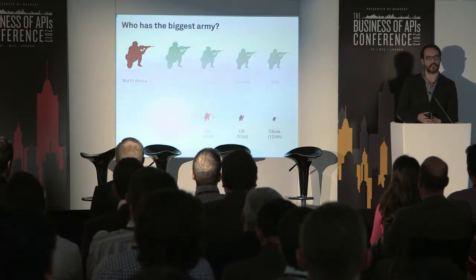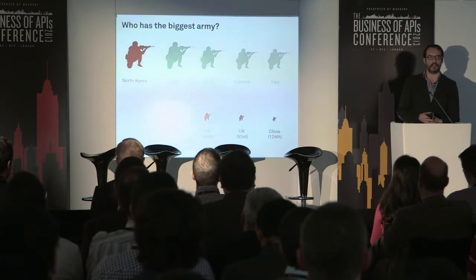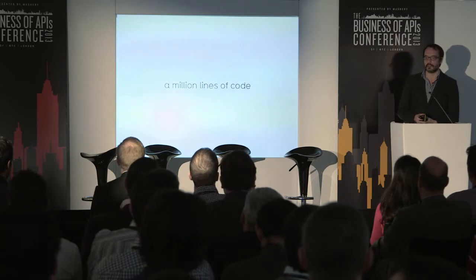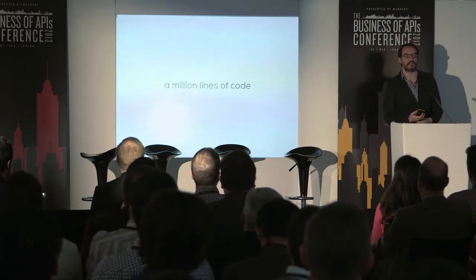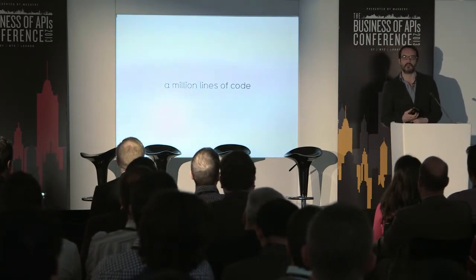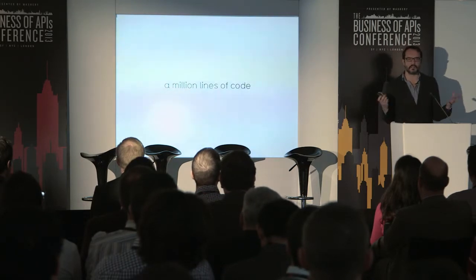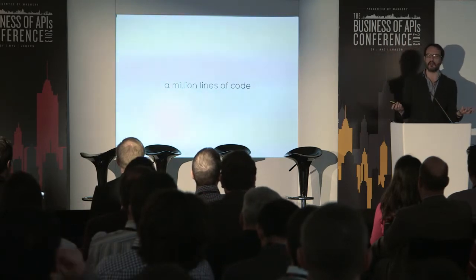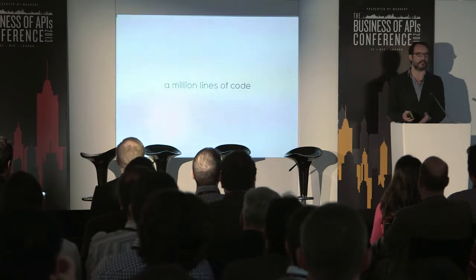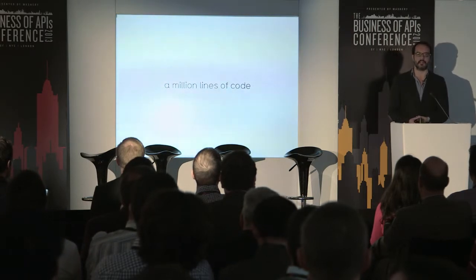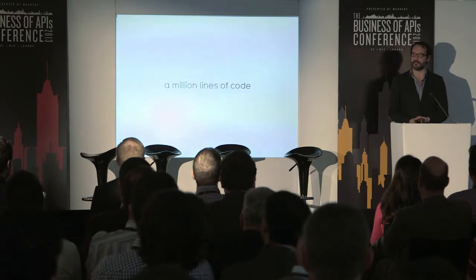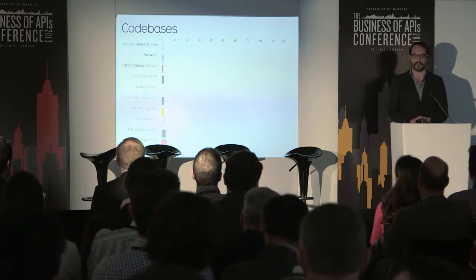The healthcare.gov site went live, and there was a lot of talk about a million lines of code — it suddenly became a metric that everyone was tuned to. There were a lot of numbers circulating and, out of context, I didn't really understand: is a million a lot? Is 500 million a lot? What does it mean? So I gathered a load of these numbers together, and it created a little interesting retrospective into the history of code.